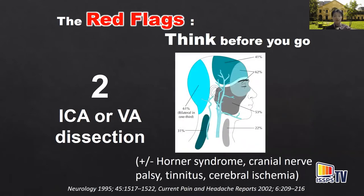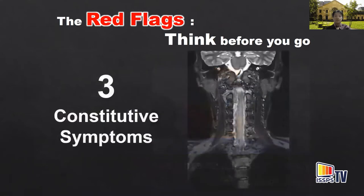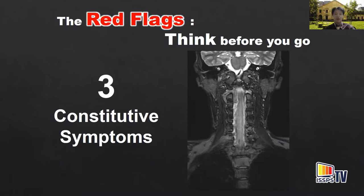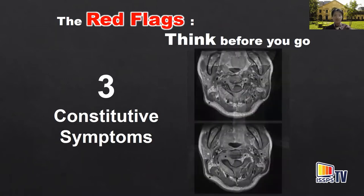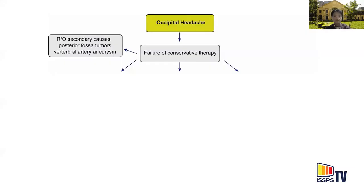The second red flag is internal carotid artery or vertebral artery dissection — more common than expected, and according to a Neurology 1995 study, more patients have gradual onset rather than abrupt onset. Do ultrasound or imaging to rule this out. If the patient has Horner's syndrome, cranial nerve palsy, tinnitus, or cerebral ischemia, think vascular dissection. Physical examination like the extension-rotation test can rule out vertebrobasilar insufficiency. The third red flag is constitutional symptoms — night pain or unexplained weight loss. One patient presented with typical occipital neuralgia, but MRI showed C2 neural foramen invasion by a metastatic lesion. Think before you intervene.